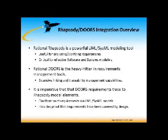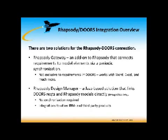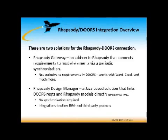The two solutions we're going to talk about today: first, Rational Rhapsody Gateway, which is an add-on to the Rhapsody product. It connects Rhapsody model elements to requirements sources, with Doors being one of those possible sources. It also works with Word and Excel, and there are actually several other predefined things that it will work with. You can also customize it to go to really any requirement source that you need to.